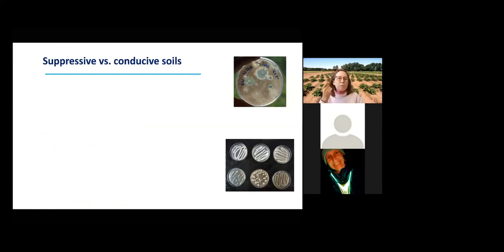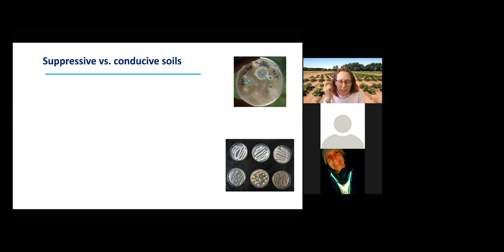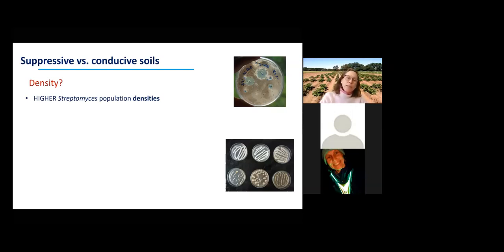What we did have at the experiment station was the suppressive soil plot — about a one-and-a-quarter-acre long-term potato monoculture — and immediately adjacent across the tractor alley, a conducive soil plot. Those two soils are indistinguishable in terms of N, P, K, and soil structure, but they differed in their planting history. We zeroed in and said we need to find out comprehensively: we need to convince ourselves that our Streptomyces is really critical to disease suppression. So we compared Streptomyces communities in the suppressive and adjacent conducive soil. Suppressive soils had significantly higher Streptomyces densities.